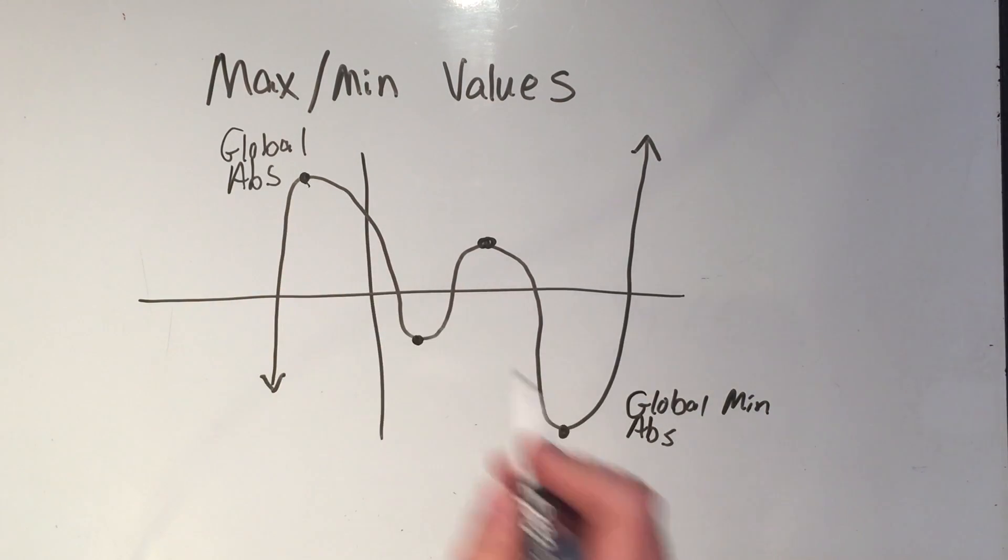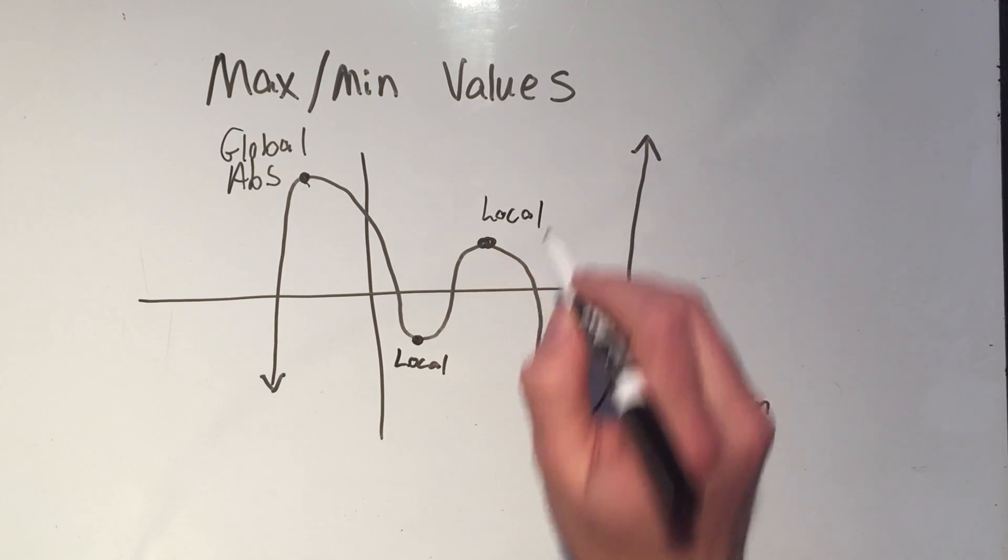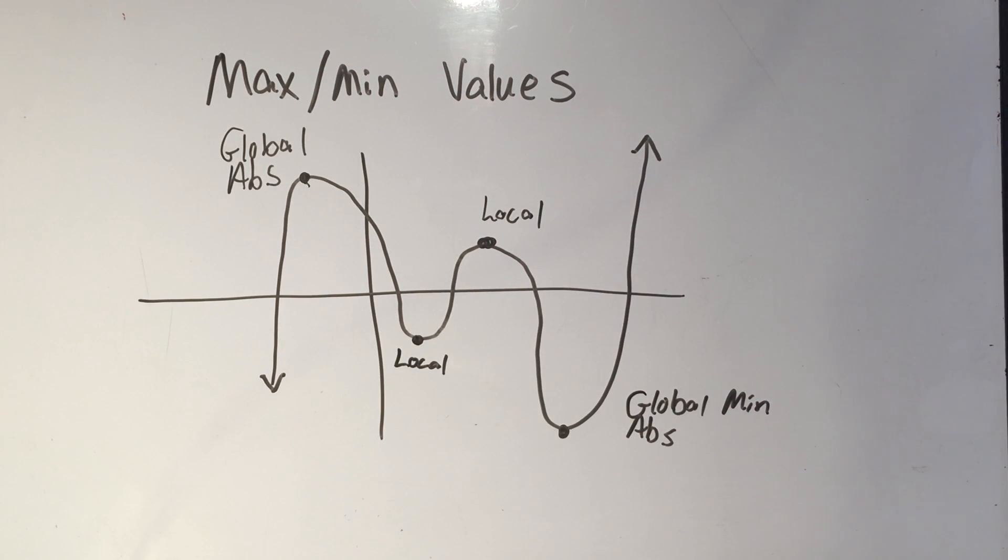Well if these things are global, these things are local. So if you have a minimum, a point where it turns around, but it's not the lowest, it's a local max or min. So these two things would be called local maximum or minimum. I should also note that your professor might call these extrema or extreme values. Okay, that's just a fancy way of saying max or min.